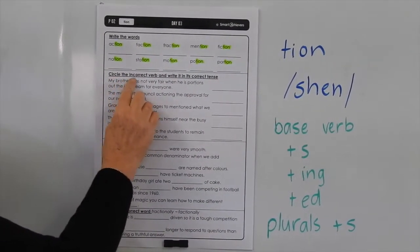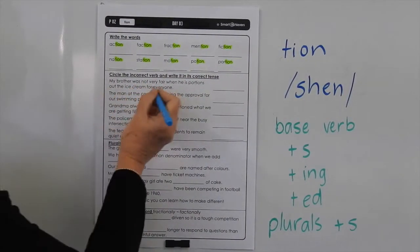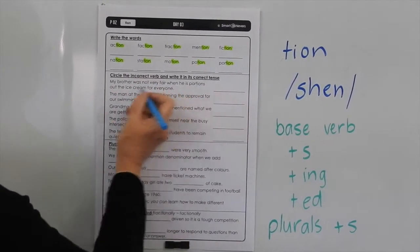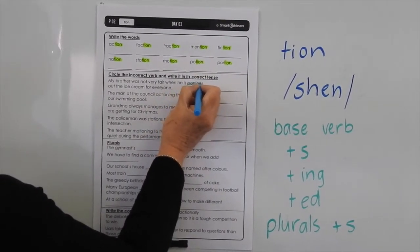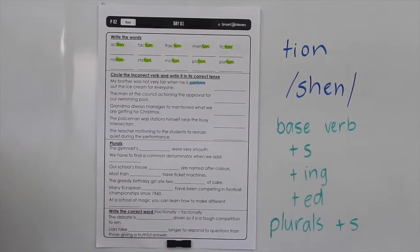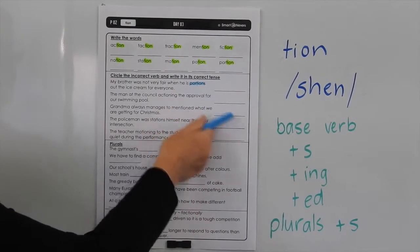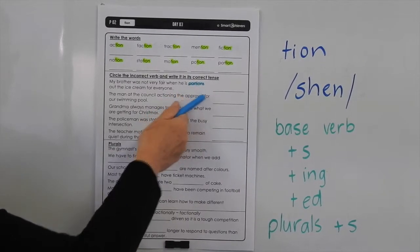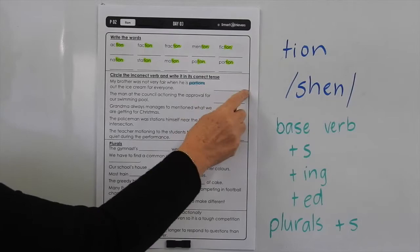Down here it says circle the incorrect verb and write it in its correct tense. 'My brother was not very fair when he is portions out the ice cream for everyone.' It's hard to read incorrectly, but it makes it very obvious which verb is in the wrong tense. So you have to decide what the ending should be on that verb so that it is in its correct tense for that sentence, and you can write it on that line.